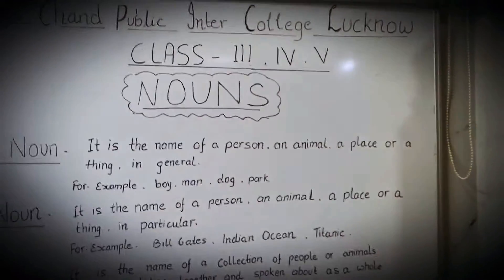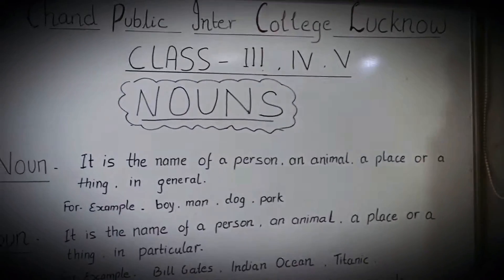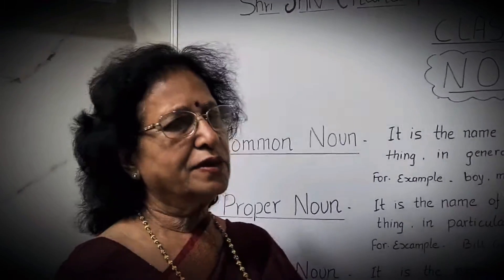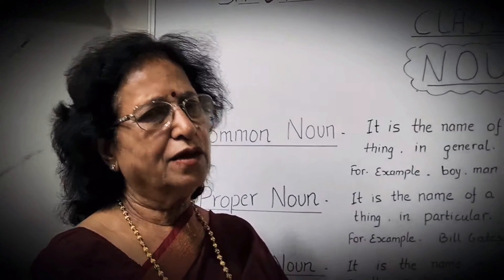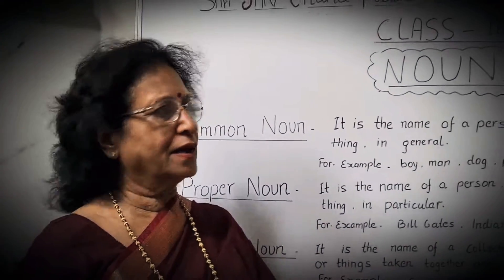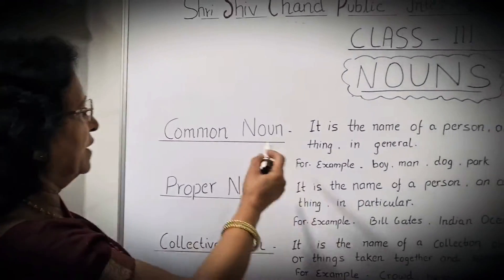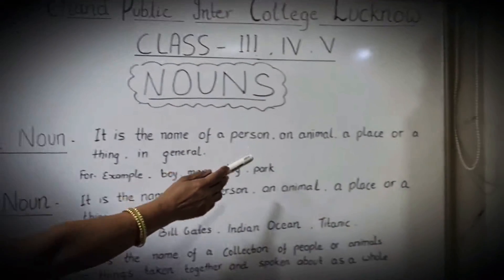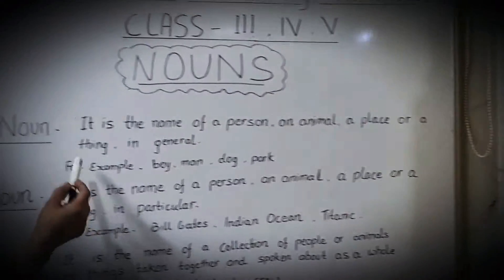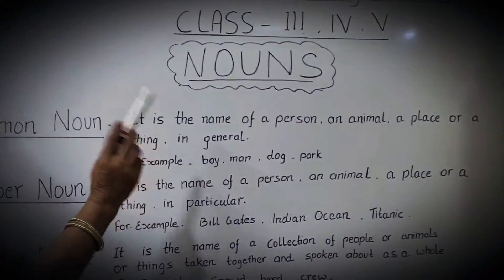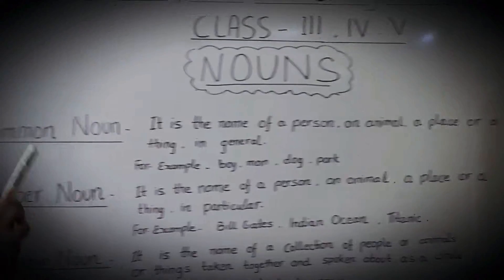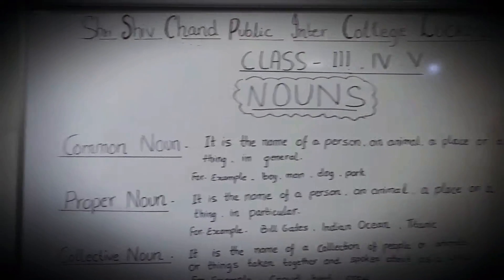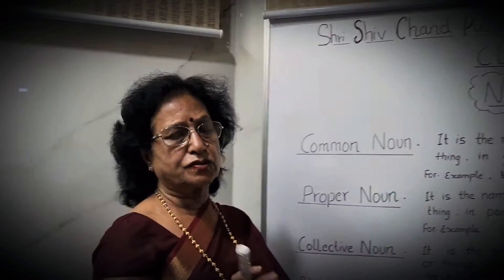All of you know a noun is the name of a person, place, or a thing. You can also add animal here. So we can say it is the name of a person, animal, place, or a thing. Noun can be classified into 4 categories.